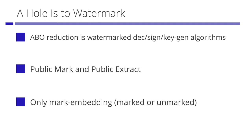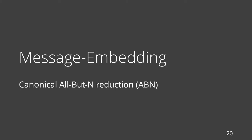So far, we saw all-but-one reductions work as watermarked functions. This is public mark and public extract watermarking. However, we can achieve only mark-embedding watermarking — that is, we can check whether a function is marked or unmarked. We want to embed a message. To do this, we generalize all-but-one reductions to all-but-n reductions.